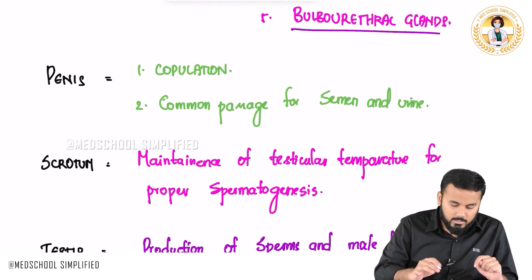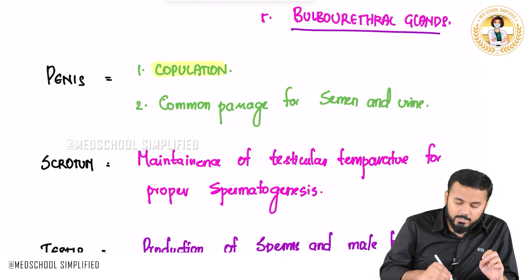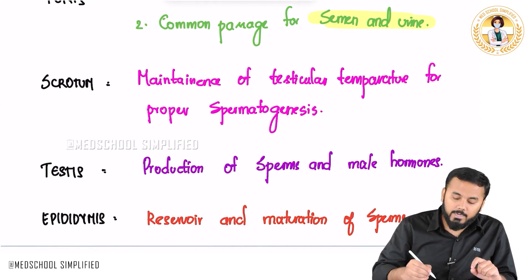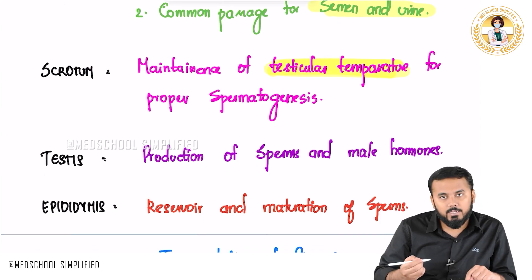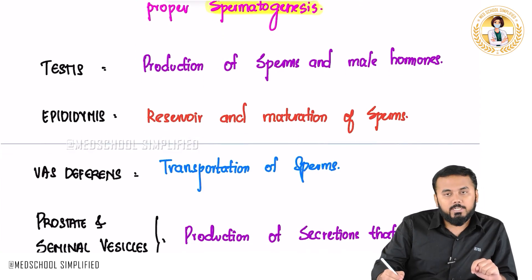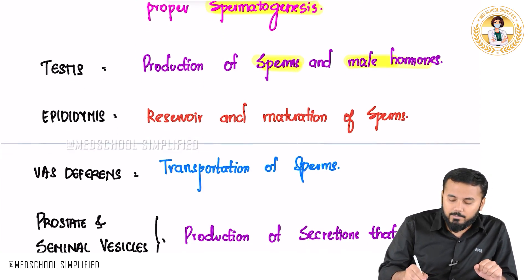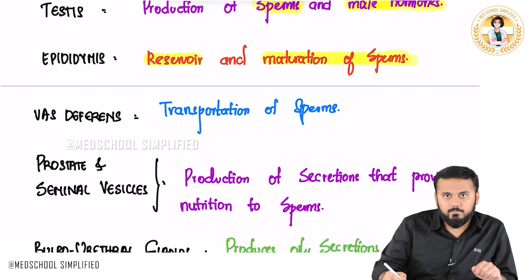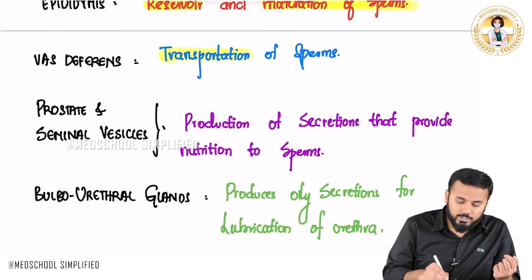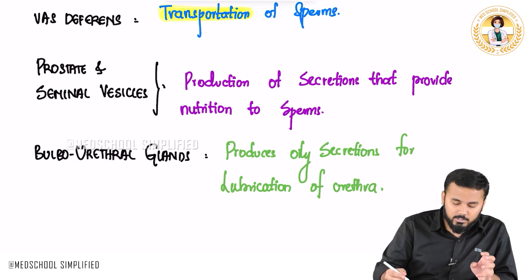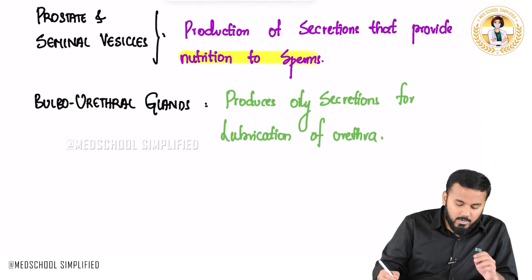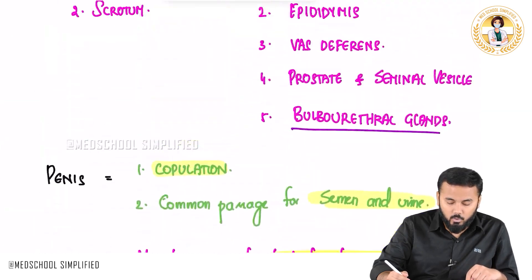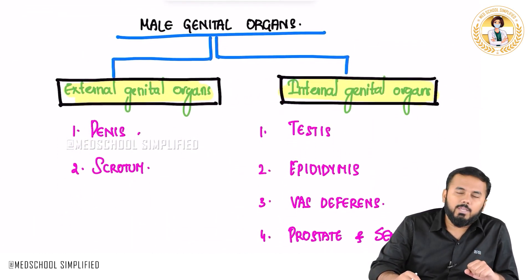To summarize: the penis is responsible for copulation and is the common passage for both semen and urine. The scrotum maintains testicular temperature for spermatogenesis. The testes produce sperms and male hormones. The epididymis is the reservoir and site of maturation of sperms. The vas deferens handles transportation. The prostate and seminal vesicles release secretions that nourish the sperms. And the bulbourethral glands provide lubrication of the urethra. These are the important introductory points regarding the male genital organs. Thank you so much for watching. Goodbye.